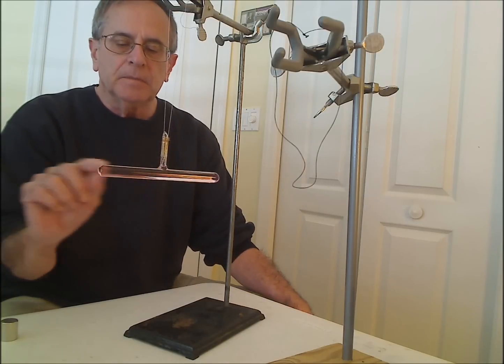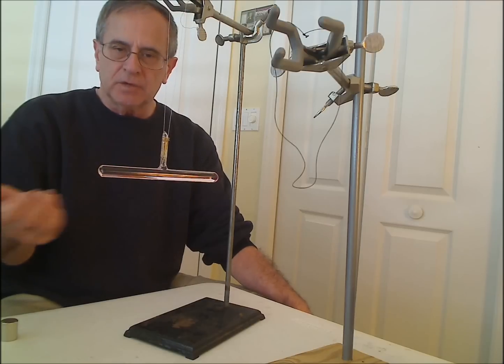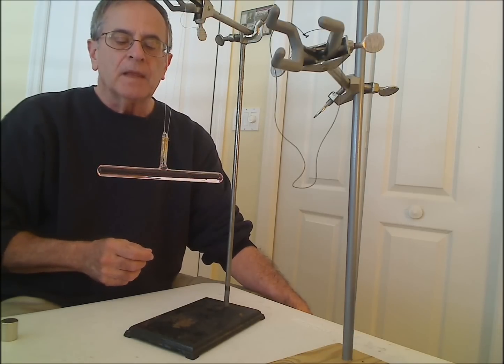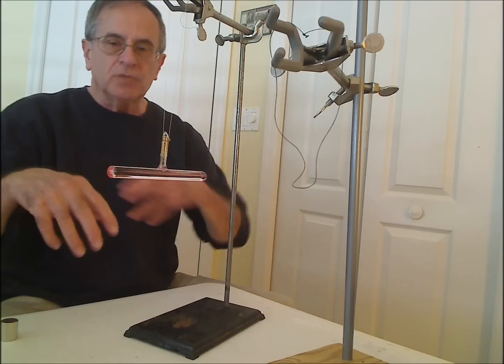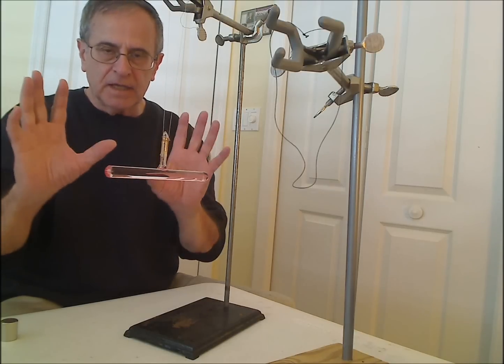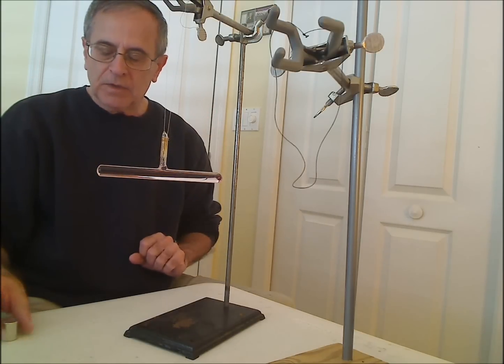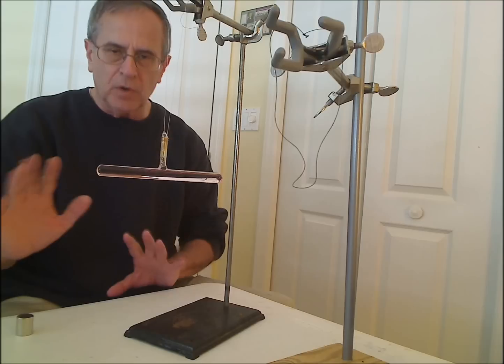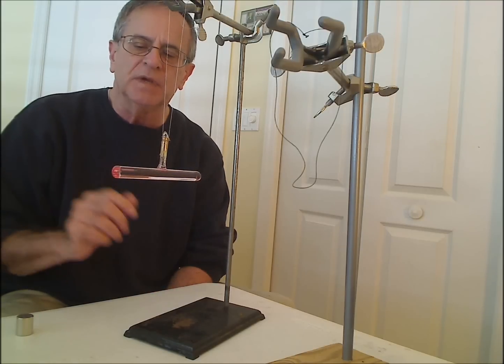But in a material where there are unpaired electrons, usually in the metal ion, the electrons are unaligned in the absence of a field. But then when you put it in a magnetic field, you get a partial alignment, not a total alignment, but a partial alignment of the spins.